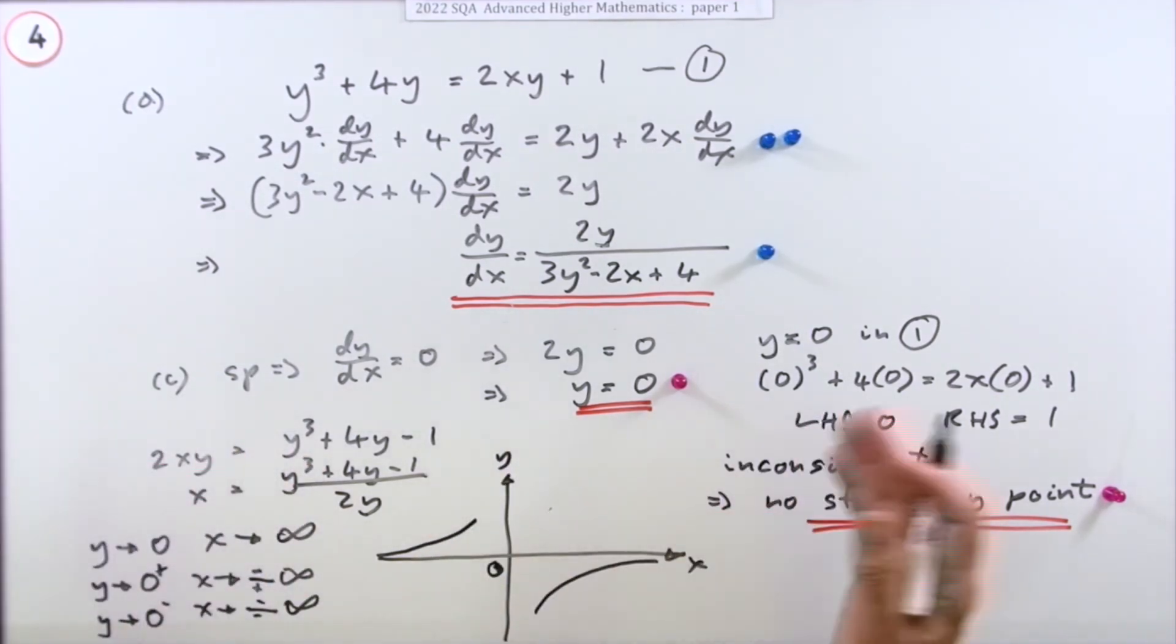You didn't need to know any of that, because there was only a two mark question. You're meant to just finish with 'inconsistent, no stationary point.' But what was the reason? That was the reason—you'd have some asymptotes going on there.